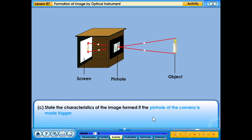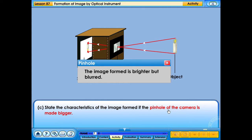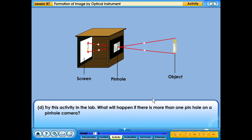State the characteristics of the image formed if the pinhole of the camera is made bigger. The image formed is brighter but blurred. Try this activity in the lab. What will happen if there is more than one pinhole on a pinhole camera?